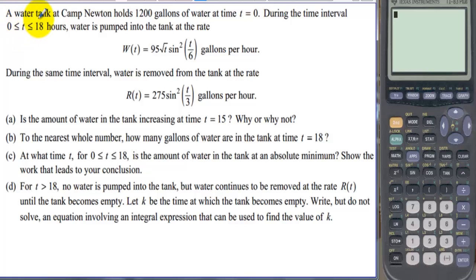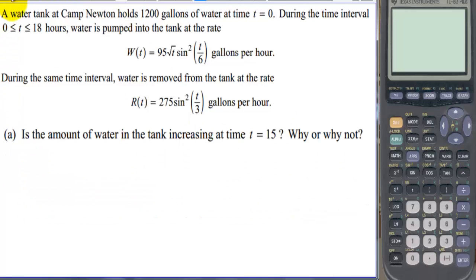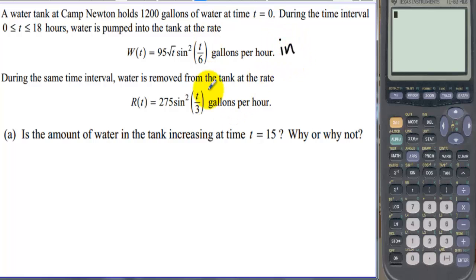Today we're going to cover an AP question about Camp Newton. It has four parts. A water tank at Camp Newton holds 1200 gallons of water at time t equals zero. During the time interval 0 to 18 hours, water is pumped into the tank at the rate W(t), and during the same time interval, water is removed from the tank at the rate R(t).